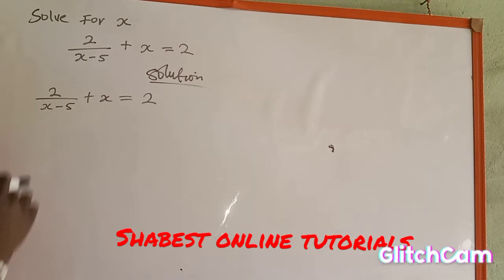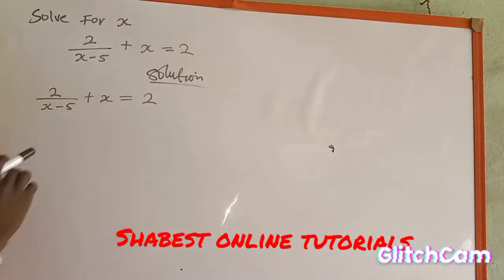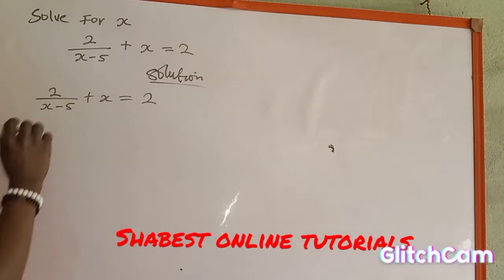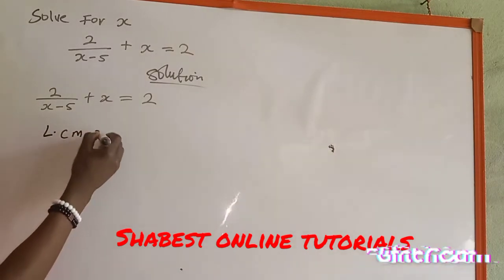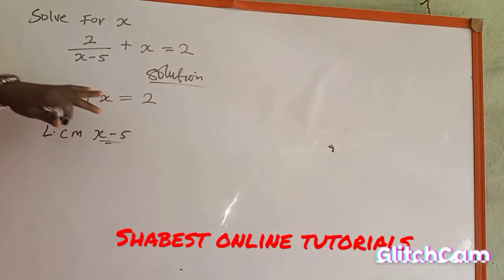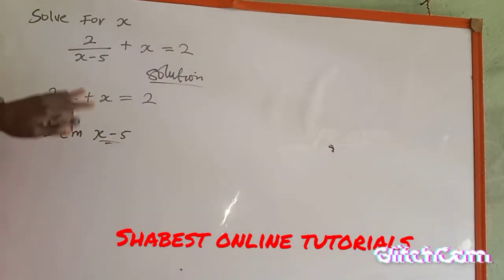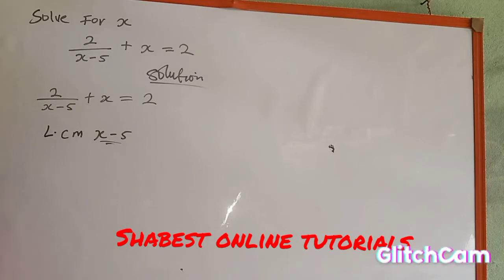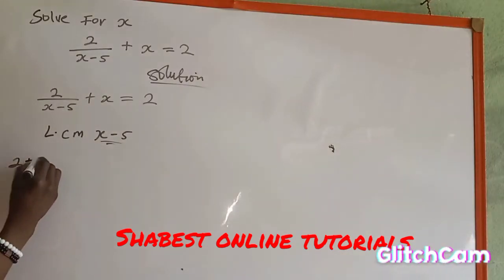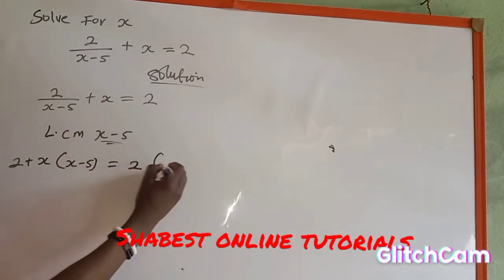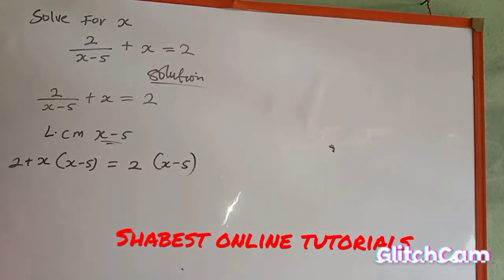We are going to look for the LCM of s minus 5, and multiply all terms by this LCM. The LCM of s minus 5 is simply s minus 5, since it is the only denominator. So we multiply through both the left-hand side and the right-hand side by s minus 5. On the left-hand side we have 2 plus s, multiplied by s minus 5, equal to 2 multiplied by s minus 5.